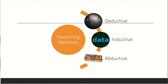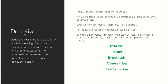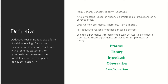Deductive reasoning is a basic form of valid reasoning. Deductive reasoning starts out with a general statement — simply, we give the theory. For example, the original theory was that the Sun is rotating around the Earth, and finally the conclusion came that Earth is actually moving around the Sun.